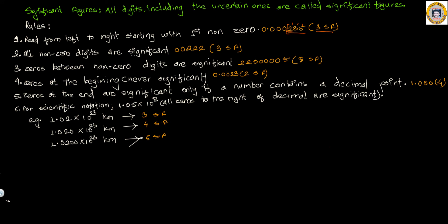Rule two: all non-zero digits are significant. Whenever you are given a number like this, all the digits which are not zero are significant. So these three non-zero digits are all significant.